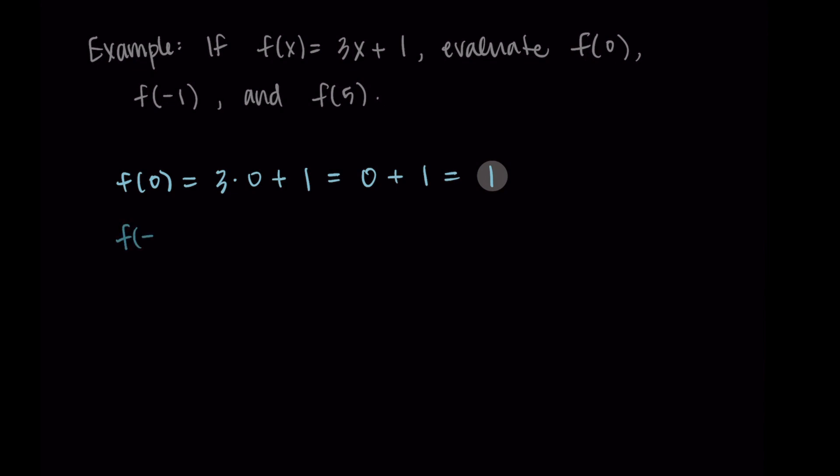Let's repeat this for two more. f(-1): here, negative 1 gets substituted in for x. So we have 3 times -1 plus 1. That's -3 + 1, which is -2. So f(-1) = -2.